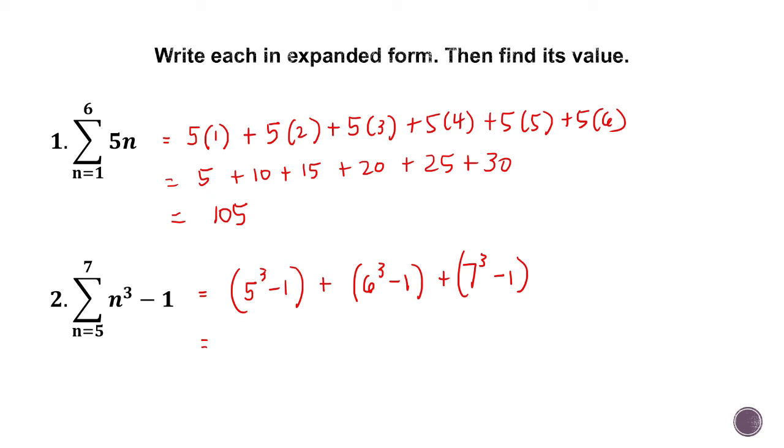Now, simplify. 5 cubed is 125 minus 1. 6 cubed is 216 minus 1. Plus 7 cubed is 343. Actually, pwedeng idiretso na yung minus na yung 1, pero sige, let's do it step by step.